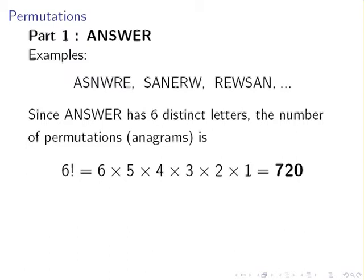Now, since ANSWER has six distinct letters, they're all different, the number of permutations is as follows. 6 factorial, and that's equal to 6 times 5 times 4 times 3 times 2 times 1, that is 720.